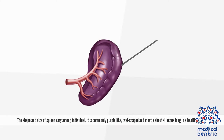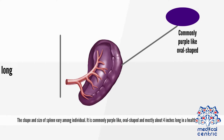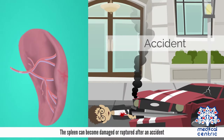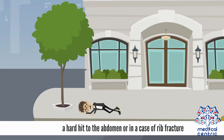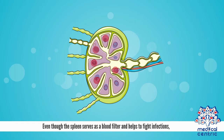The shape and size of the spleen vary among individuals. It is commonly purple-like, oval-shaped, and mostly about 4 inches long in a healthy human. The spleen can become damaged or ruptured after an accident, a hard hit to the abdomen, or in a case of rib fracture. This can lead to its removal.